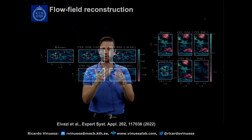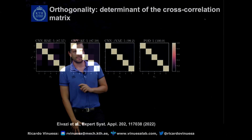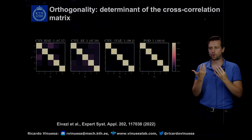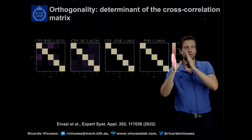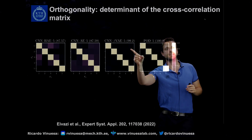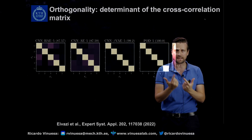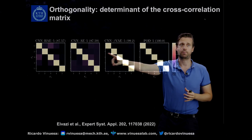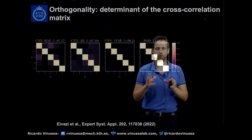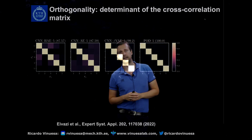We can now assess how helpful these approaches are at imposing interesting physical properties in our reduced order model. Looking at the determinant of the cross-correlation matrix — how correlated the different modes are in physical space — POD has 100 percent orthogonality by design. The beta-variational autoencoder achieves over 99 percent orthogonality. The CNN-based autoencoder and the hierarchical autoencoder both have much less orthogonality, which causes problems for interpretability and parsimonious modeling.